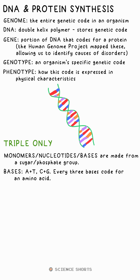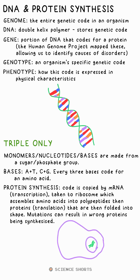Every three of these bases — we can call them codons — are a code for an amino acid. The sequence is copied by mRNA. This copy is then taken out of the nucleus to a ribosome in the cell, where amino acids are connected in the order needed, which makes a protein, the shape of which affects its function.